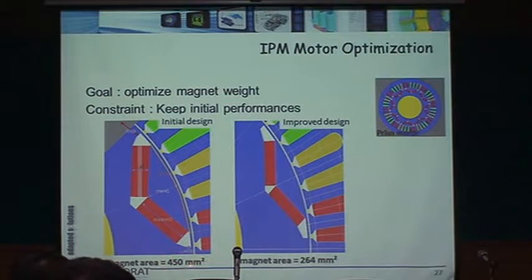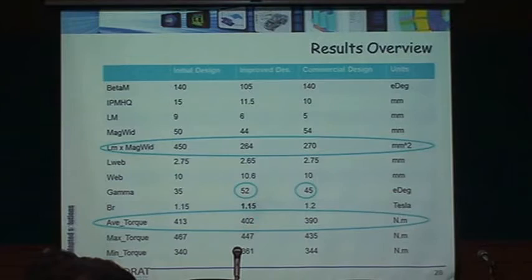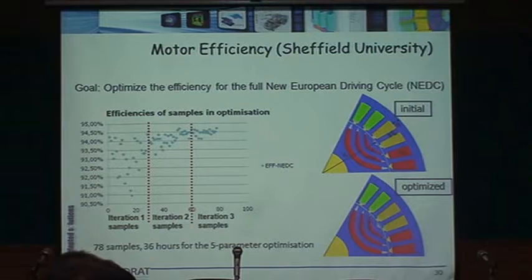Magnet weight reduction example: we minimize the magnet surface area, which is directly proportional to magnet weight. The magnet area went from 450 mm² down to 264 mm² — a substantial reduction.